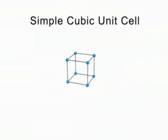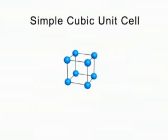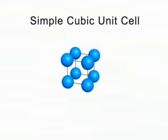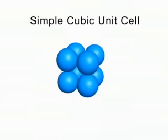All cubic unit cells have particles at the corners of a cube. The simple or primitive cubic unit cell has particles at the corners only. In reality, the particles lie as close to each other as possible. Note that the particles touch along the cube edges, but not along a diagonal in the face or along a diagonal through the body.